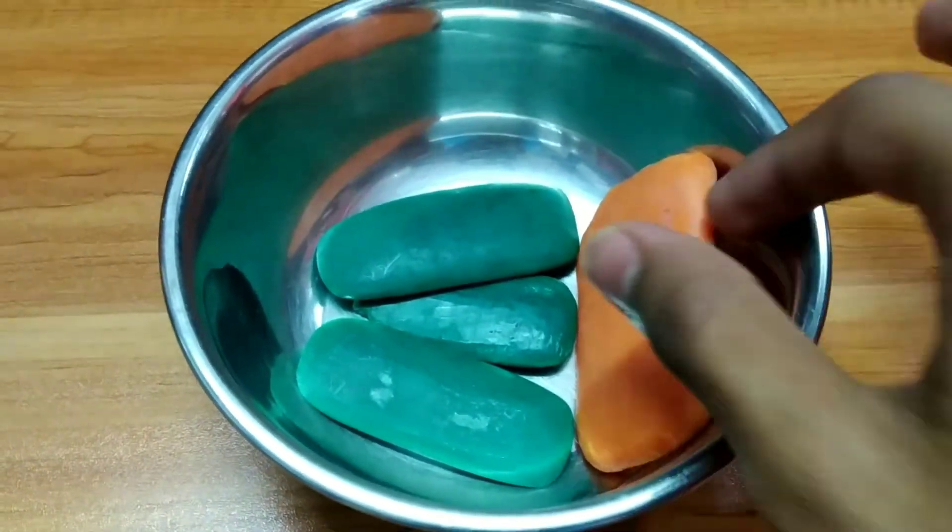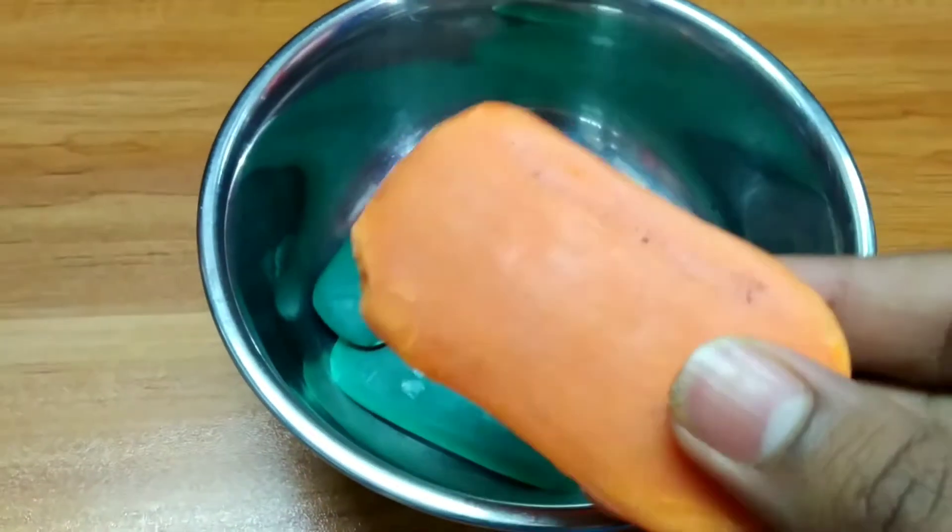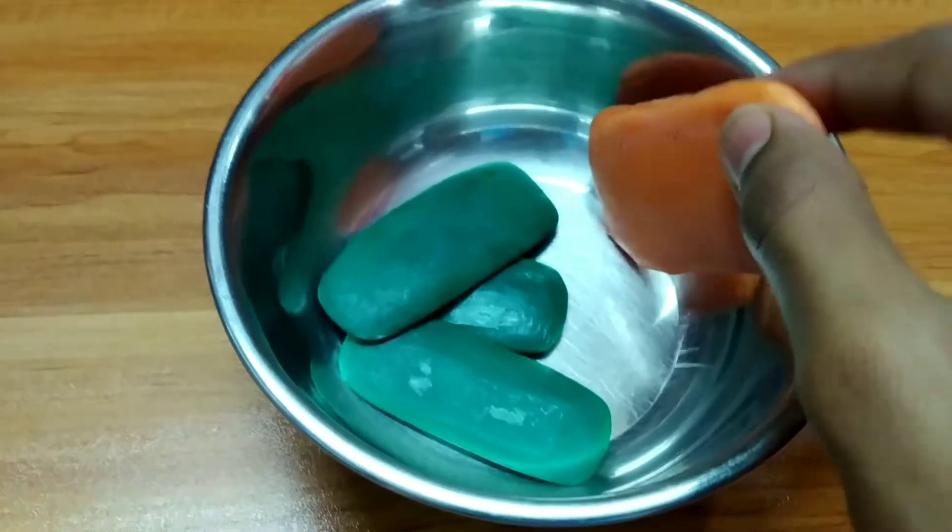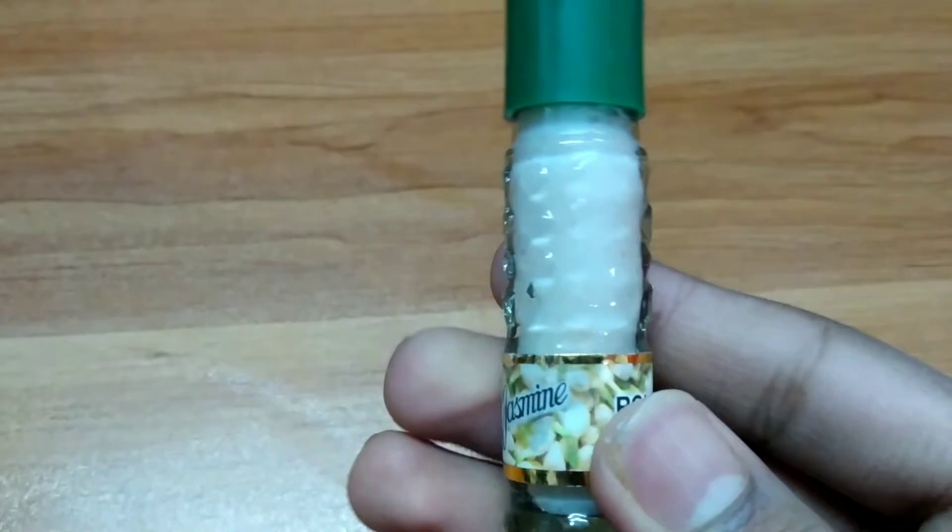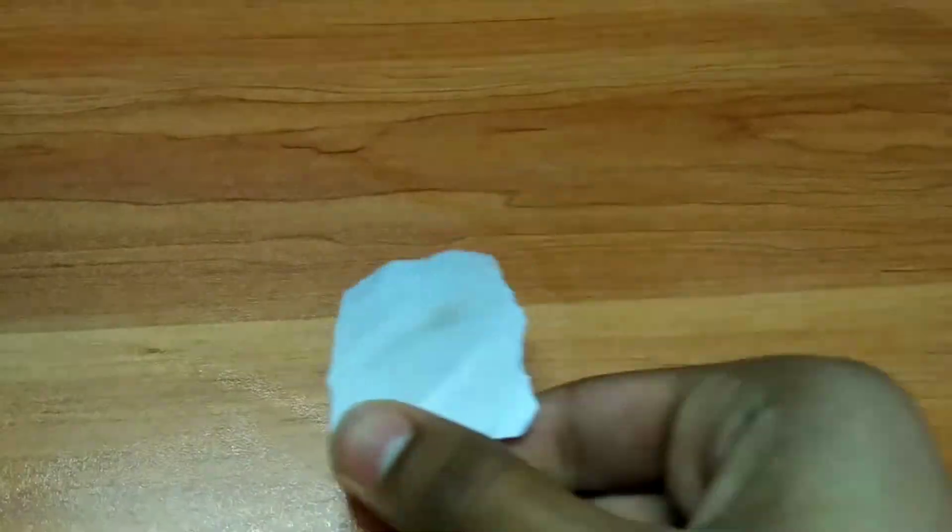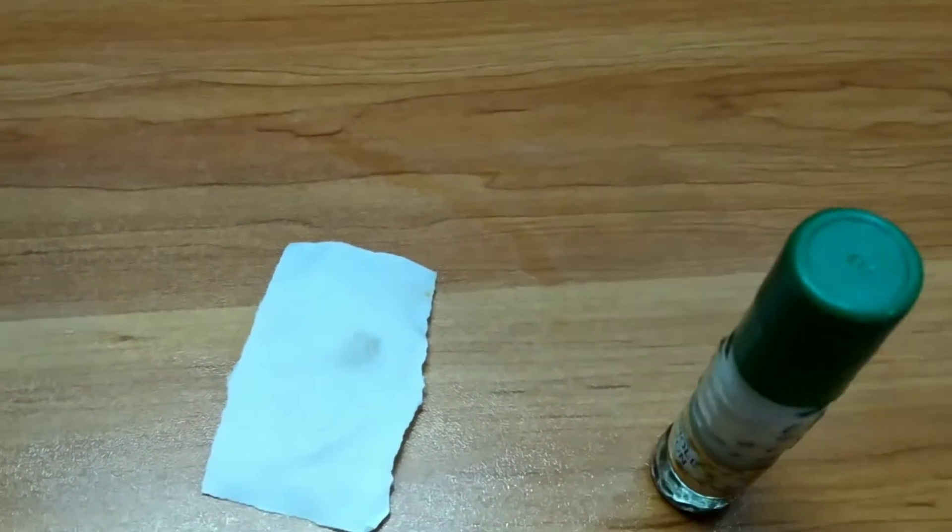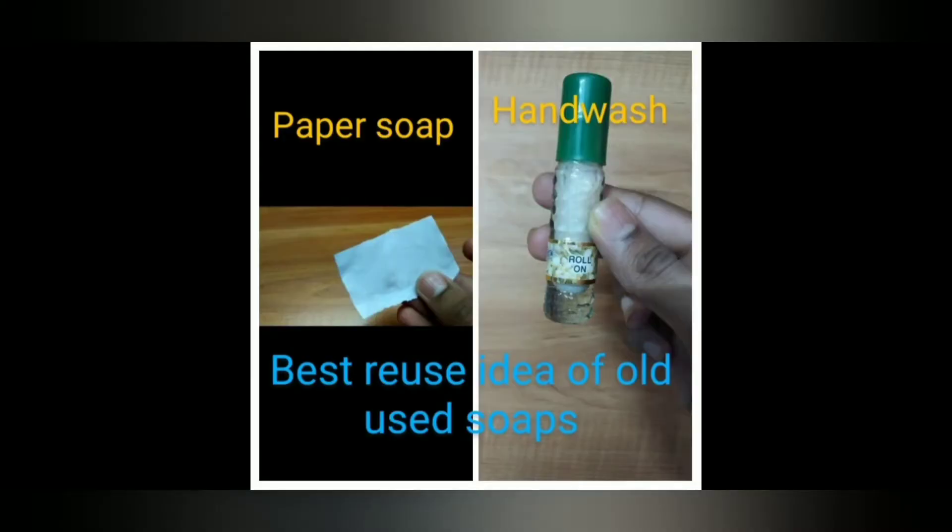Hello everyone, welcome to Satya Learning Channel. In today's video, let's learn how to reuse old used soaps. With these soaps, we are going to make a roll-on liquid soap or hand wash and a paper soap. So without any delay, let's get into the video and see how to make and use these.